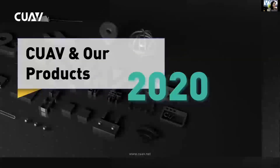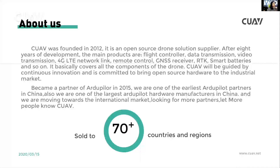Thank you for this opportunity to talk about CUAV here today. We will talk about CUAV new products first. CUAV was founded in 2012. It is an open-source drone solution supplier. The main products include flight controllers, data transmission, video transmission, 4G LTE network link, remote controller, GNSS modules, smart battery, and more.